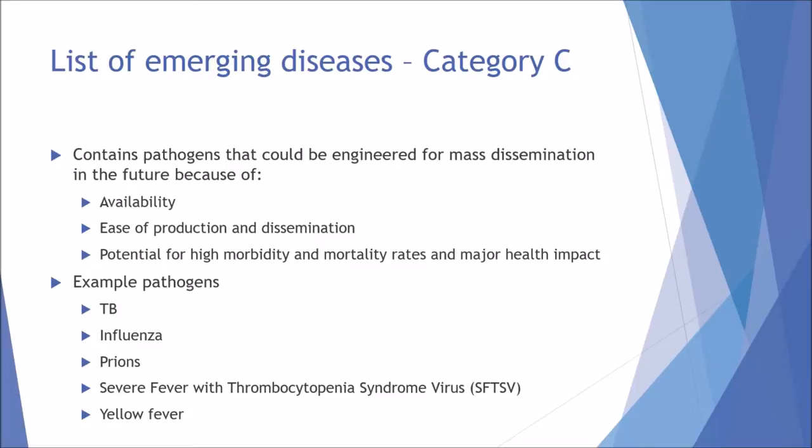Influenza is another category C example — because the virus transmits so easily it has the potential to cause mass disease, as seen with swine flu and Spanish flu which caused thousands of deaths worldwide. Prions are also included; they are small proteins which can cause disease but are latent, and the mechanisms of prion pathogenesis are still not fully understood.